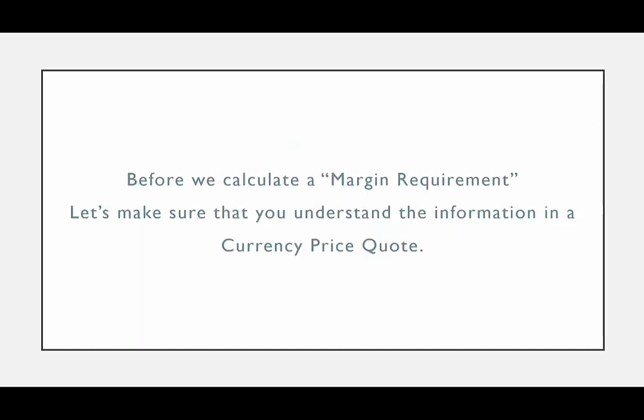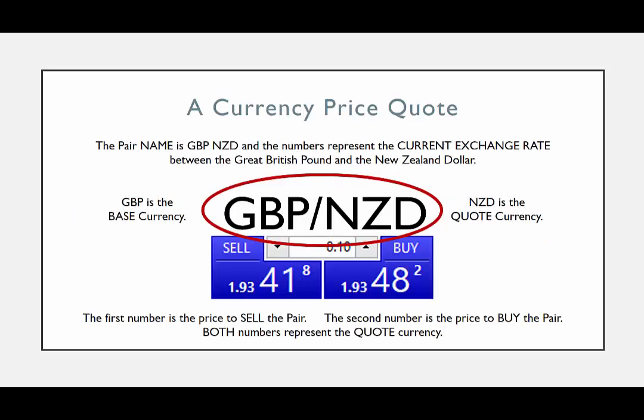Before you can calculate what the margin requirement will be for a specific trade, first you need to understand the information in a currency price quote. The currency price quote tells you what the exchange rate is between the currencies of two specific countries. In this case, the two currencies are the Great British Pound and the New Zealand Dollar, and the pair name is abbreviated as GBPNZD.